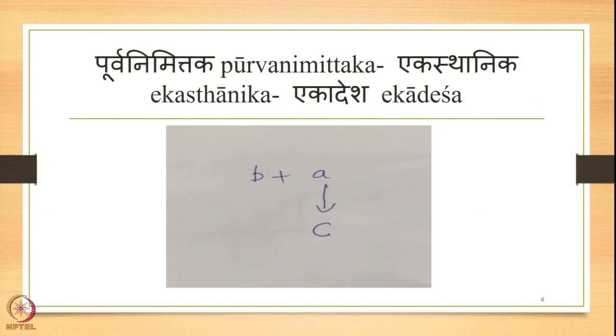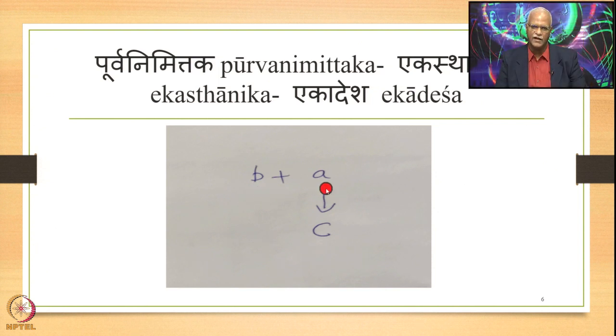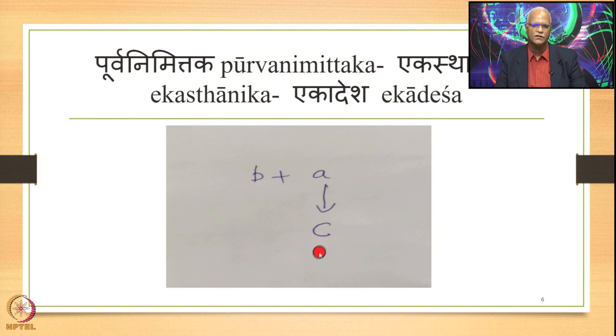This is once again coming up primarily because there is this Purva Savarana Sandhi which can be classified under Purvanimittaka Ekasthanika Ekadesha. This is diagrammatically represented where B plus A is the input: B is the left-hand side environment followed by A, and this A is substituted by C, giving output B plus C.